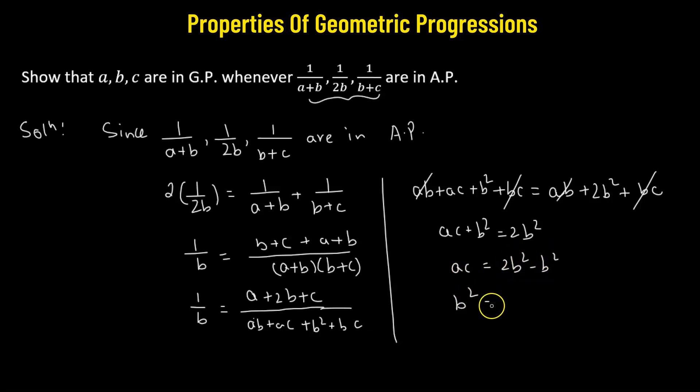Or we can rewrite this as b squared equals ac. So whenever this criterion is met, this simply means that we have b over a equals c over b, which means that a, b, c, these three numbers are in a geometric progression. Hence proved.